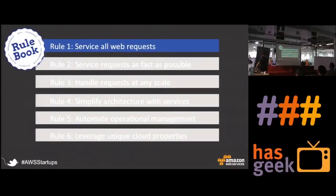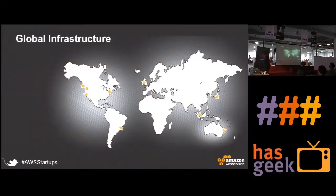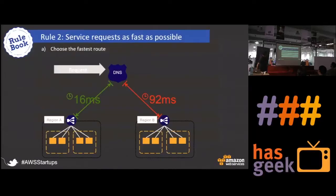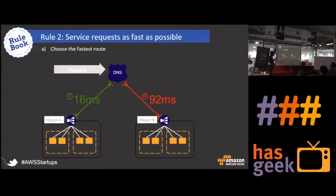Rule number one: serve all web requests. Every request that comes onto your application should be served. Customers like NDTV leveraged the entire global infrastructure to make sure none of the requests are blocked. Second: serve requests as fast as possible — choose the fastest route. DNS services have features like latency-based routing and routing to the nearest PoP. Startups like Instagram, Pinterest, Netflix leverage that.